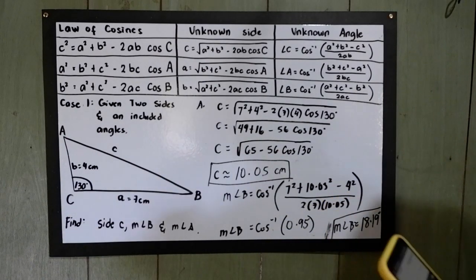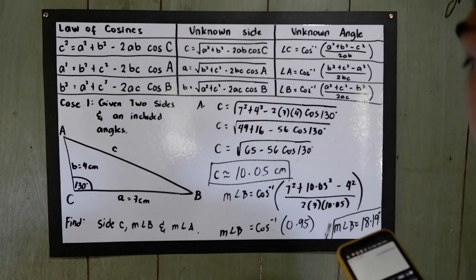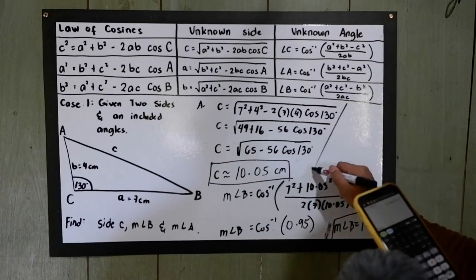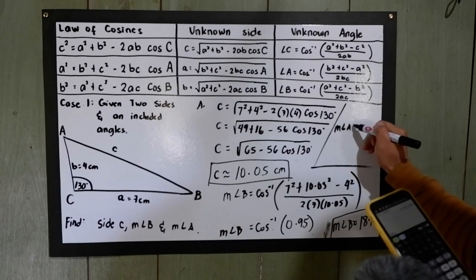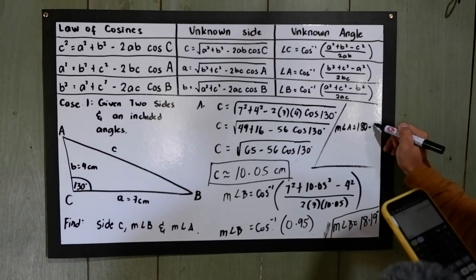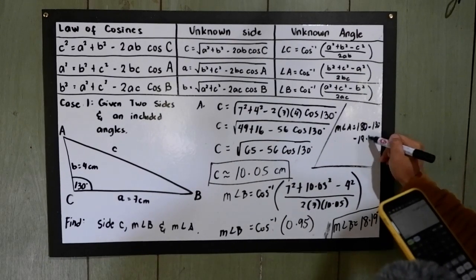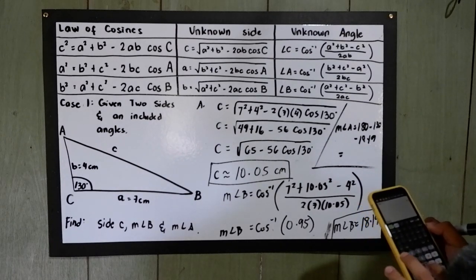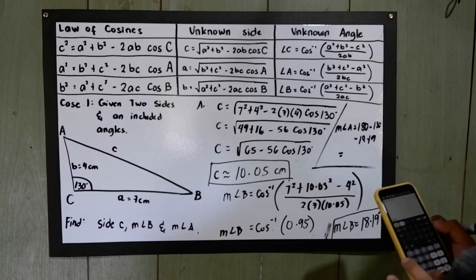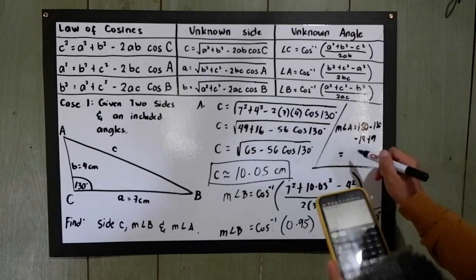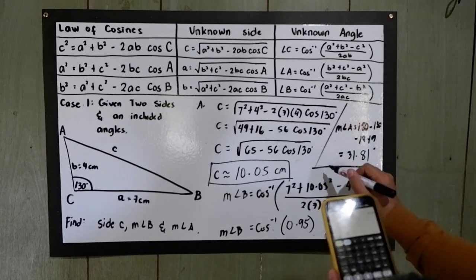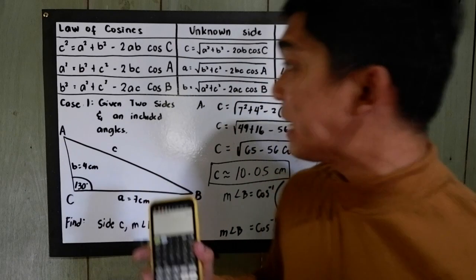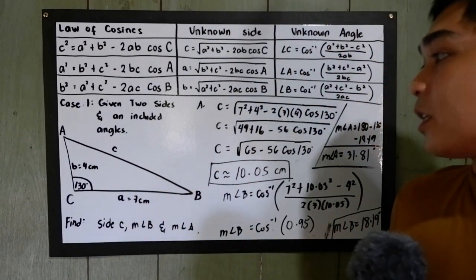After getting measure angle B, we can now get measure angle A. All we need to do is subtract 18.19 and 130 from 180 degrees. So measure angle A is equal to 180 minus 130 minus 18.19, which gives us 31.81 degrees. That is our case number one, where the given are two sides and an included angle.